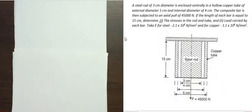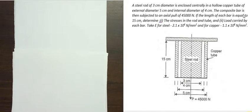Hi friends, welcome to Raman Chal. Today we will see a composite bar stress-strain example. A steel rod of 3 cm diameter is included centrally in a hollow copper tube of external diameter 5 cm and internal diameter 4 cm. The composite bar is then subjected to an axial pull of 45,000 Newtons. If the length of each bar is equal to 15 cm, determine the stresses in the rod and tube, and the load carried by each bar. Take E for steel as 2.1×10⁶ N/mm² and for copper as 1.1×10⁸ N/mm².